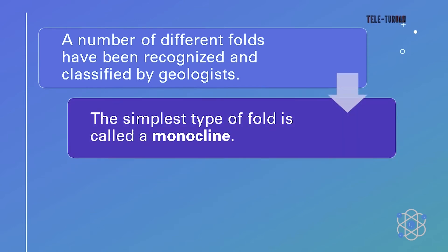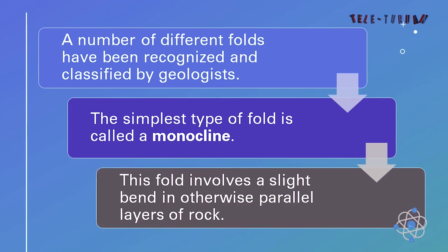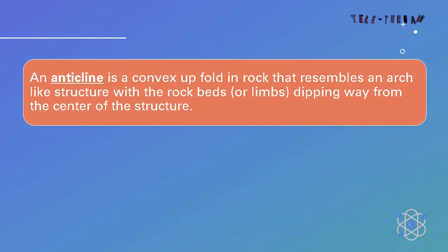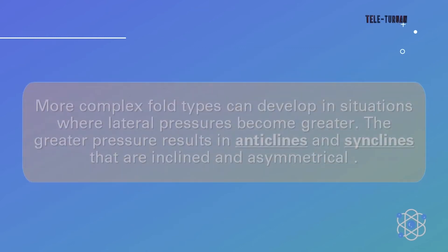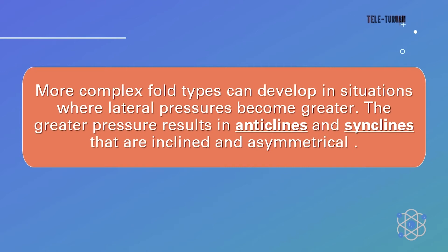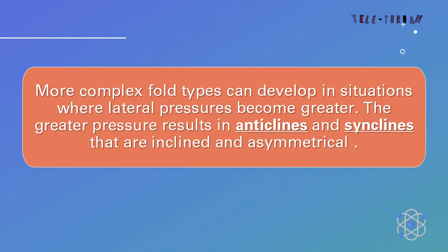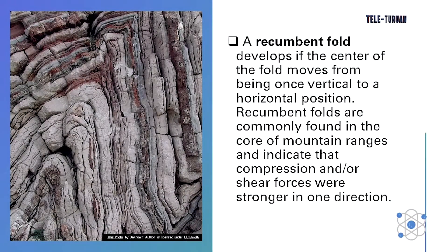A number of different folds have been recognized and classified by geologists. The simplest type of fold is called a monocline, which involves a slight bend in otherwise parallel layers of rock. An anticline is a convex-up fold in rock that resembles an arc-like structure with the rock beds or limbs dipping away from the center of the structure. A syncline is a fold where the rock layers are warped downward. Both anticlines and synclines are the result of compressional stress. More complex folds develop where lateral pressures become greater, resulting in anticlines and synclines that are inclined and asymmetrical. A recumbent fold develops if the center of the fold moves from a vertical to a horizontal position, commonly found in the core of mountain ranges, indicating that compression and/or shear forces were stronger in one direction.